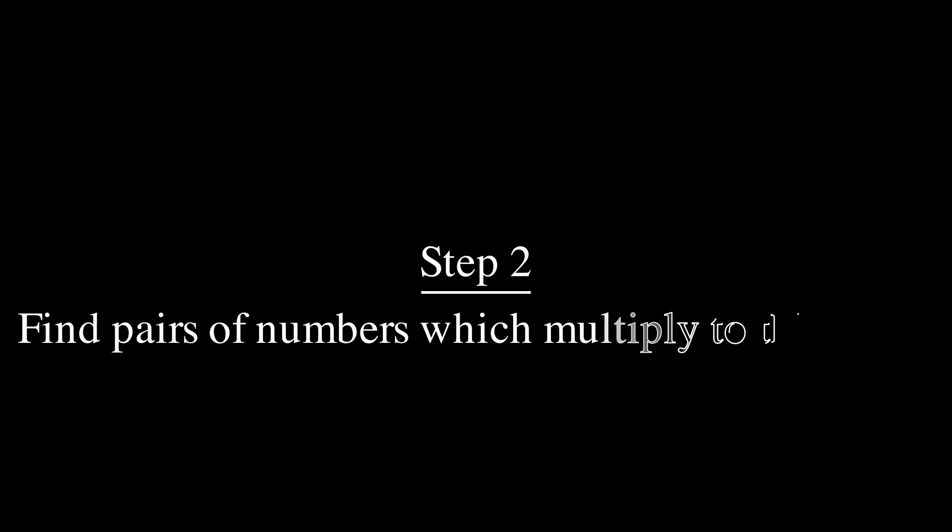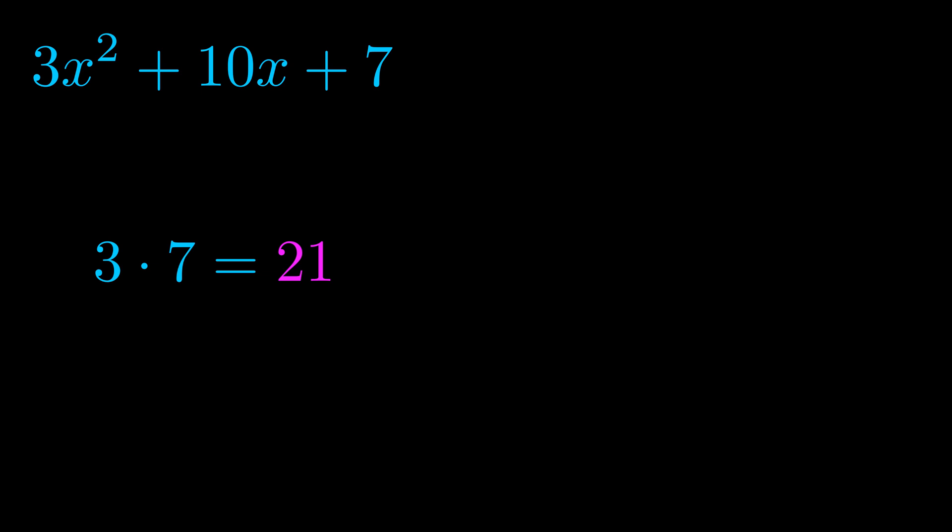Step two is to try to find all of the pairs which multiply to this number. Now it turns out you don't really need to find all of them, but go ahead and write down as many numbers as you can that multiply to the magenta value for now. Pause the video and resume when you're ready to continue. Okay, here's what I came up with.